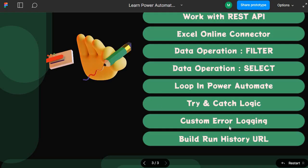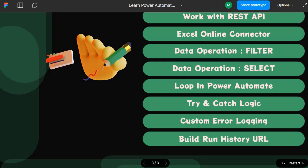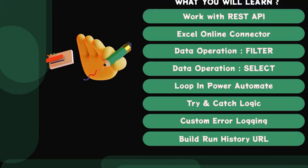Operations engineers can now easily identify what happened and why the flow failed. This is a very useful technique when working in a silo environment where the operations team and development team work separately. In the next session, we will build a custom error logging mechanism to store errors inside a SharePoint list along with the run history URL. On that note, see you in the next session — take care!